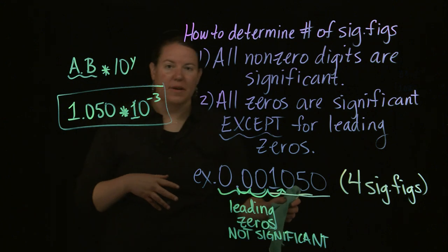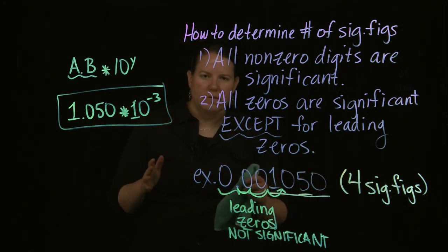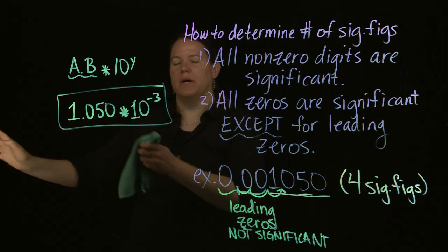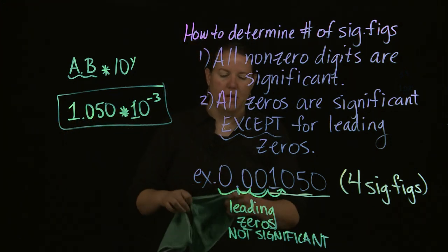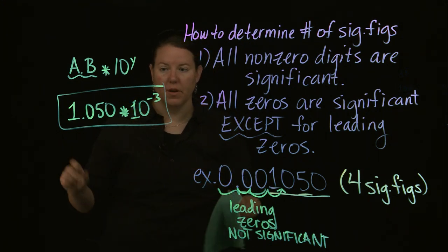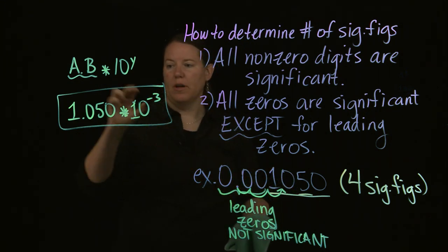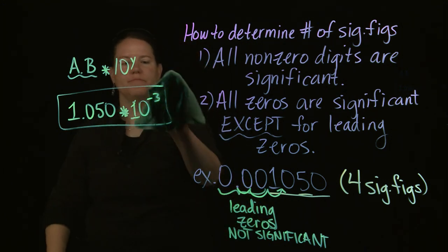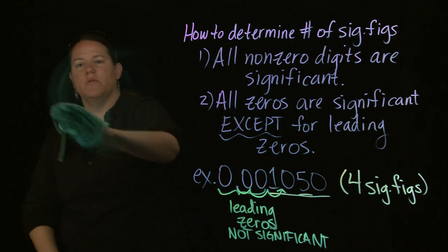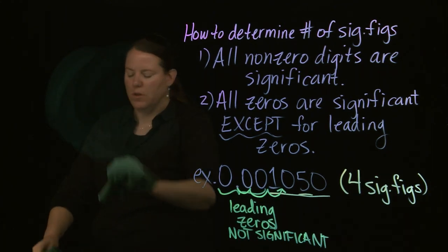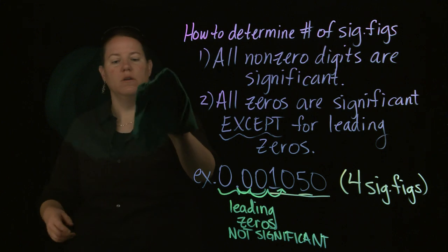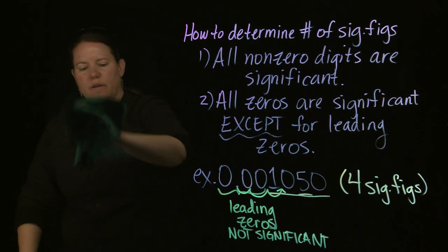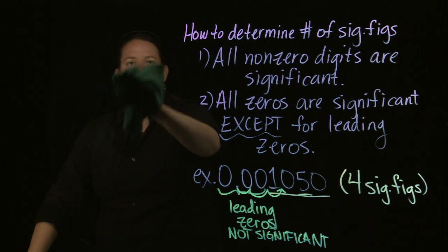Smaller numbers than 1 get a negative exponent; numbers greater than 1 get a positive exponent. That's a way to get rid of leading zeros if you never want to deal with them. Notice that in my original number and in my scientific notation, I did not change the number of significant figures — that's important. Unless you're told to, you should never change the number of significant figures going between normal notation and scientific notation.